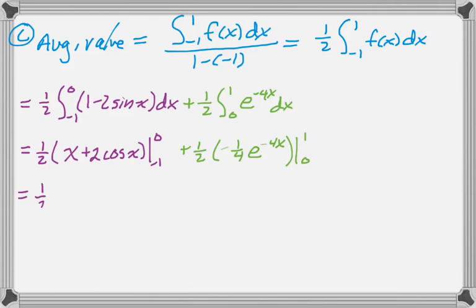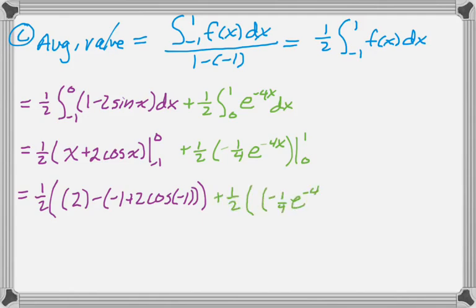And now we're just going to substitute. So 1 half the quantity. Plug in 0. And you get 0 plus 2 cosine of 0, which is 2, minus plug in negative 1. You get negative 1 plus 2 cosine of negative 1. I'm going to leave it like that. Close my parentheses. Plus 1 half. And then plug in 1. You get negative 1 fourth e to the negative 4 minus plug in 0. You get negative 1 fourth e to the 0. And they'll accept that answer. So I'm going to leave it because it's hideous. And I don't really want to simplify that at all. But anyway, that's the entire problem. And I hope you found this helpful. And good luck.